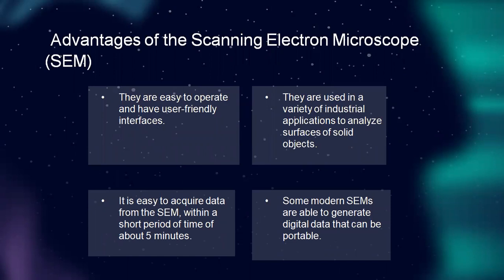Advantages of the scanning electron microscope: they are easy to operate and have user-friendly interfaces. Second, they are used in a variety of industrial applications to analyze surfaces of solid objects. Third, it is easy to acquire data from the scanning electron microscope within a short period of time of about 5 minutes. And lastly, some modern scanning electron microscopes are able to generate digital data that can be portable.